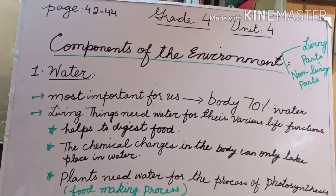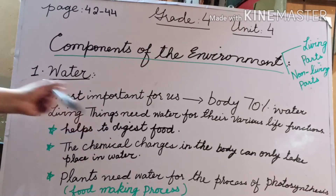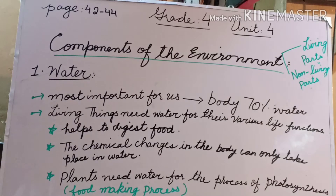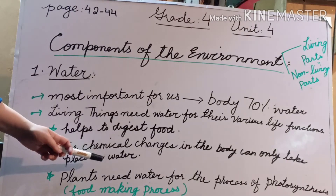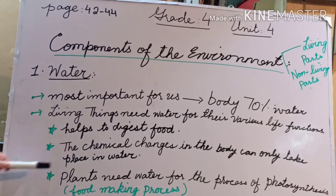Whether they are plants, animals, or humans, they all need water — it is their basic requirement. Water is needed for basic life functions and life processes, like helping to digest food. Without water there can be no digestion, because to dissolve food in the body water is very important. All the chemical changes in the body can only take place in water.